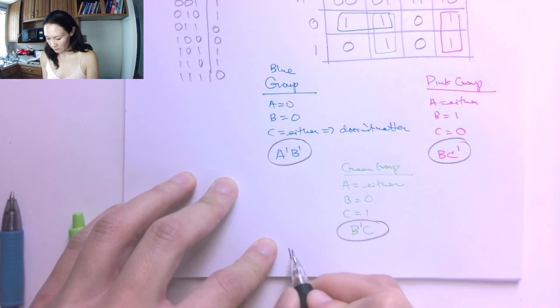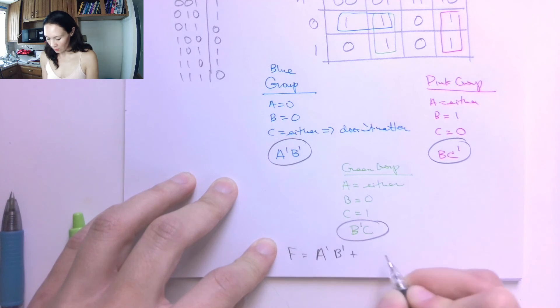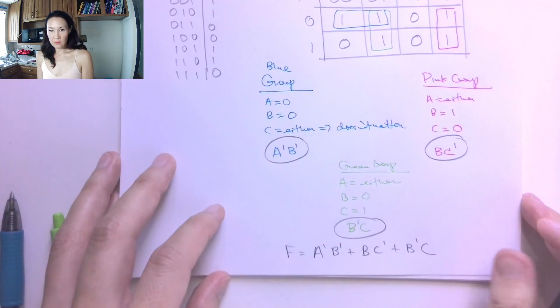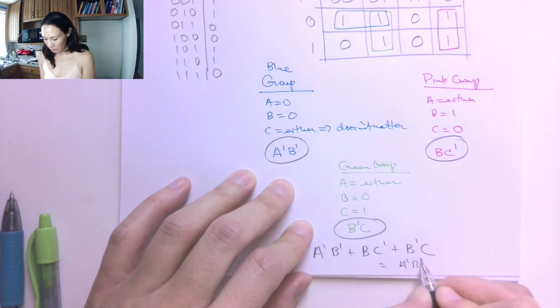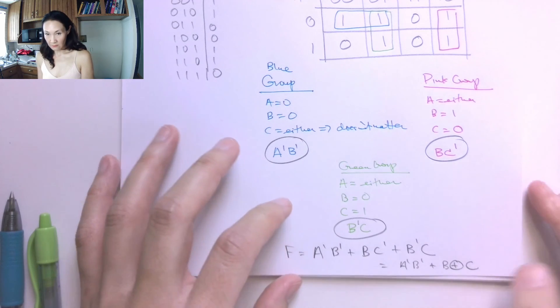So now what we do is all of these contributions from our groupings, we just or them all together. We add them all together. So our function for f is a naught b naught or b c naught or b naught c. And if you like, you might recognize that this is xor. So you could also write this as a naught b naught or b xor c if you want.